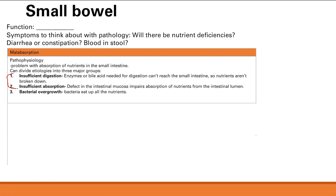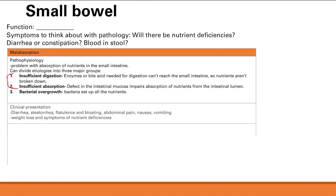Additional symptoms include flatulence, bloating, abdominal pain, nausea, vomiting — just because you're not digesting well — and weight loss because you're not getting your nutrients. To diagnose malabsorption, the first test is a fecal fat test to see if there's fat in the feces, indicating fat isn't being absorbed correctly. However, this doesn't tell you which specific problem — insufficient digestion or insufficient absorption — is the cause.